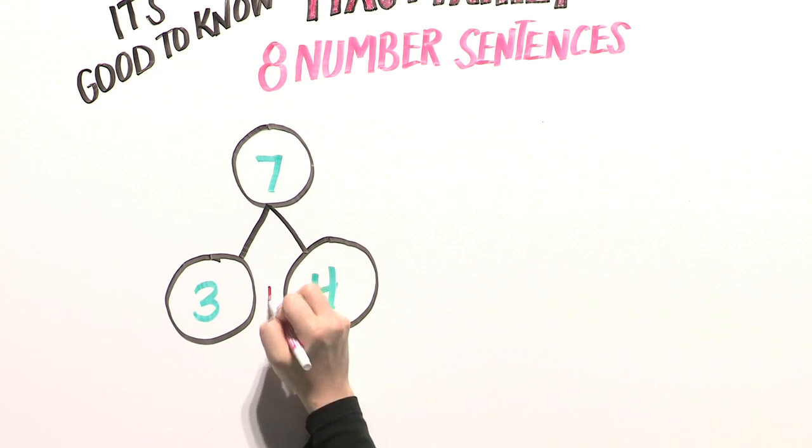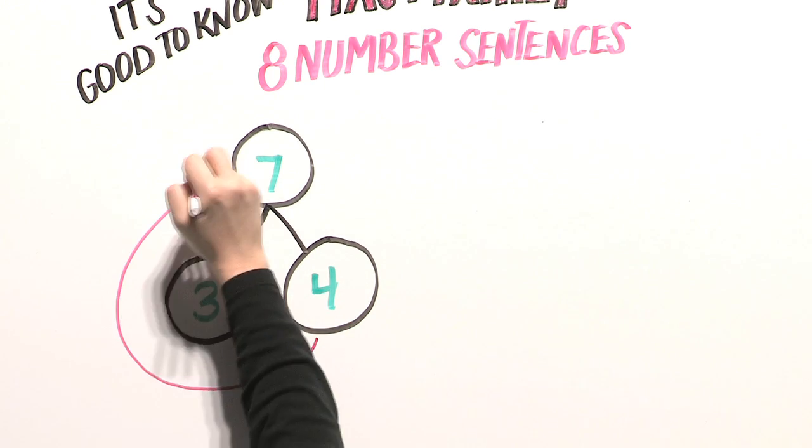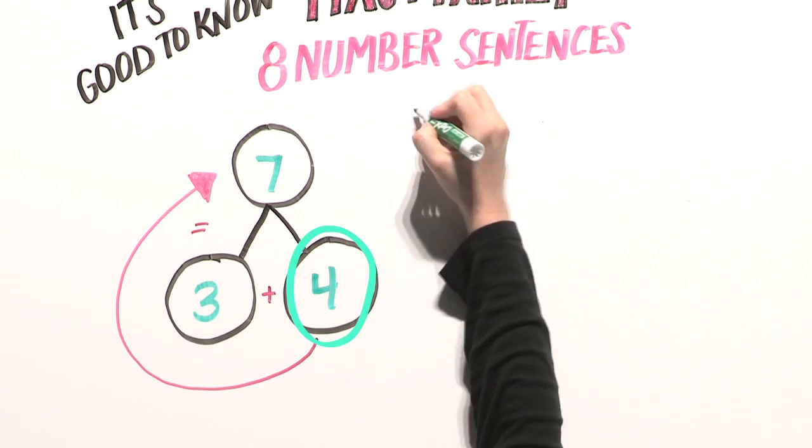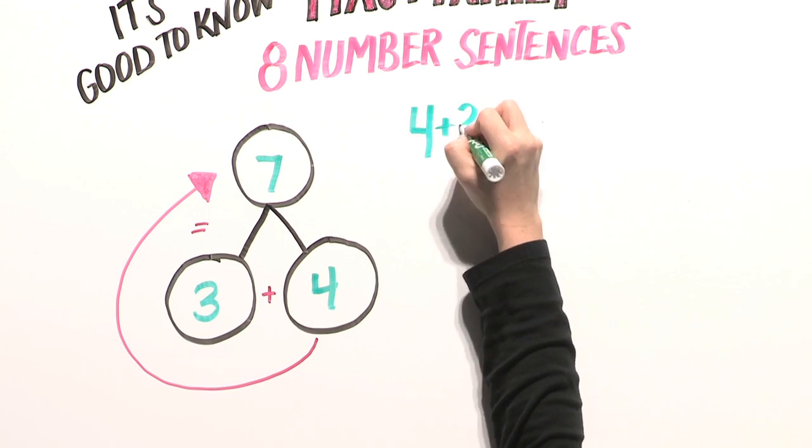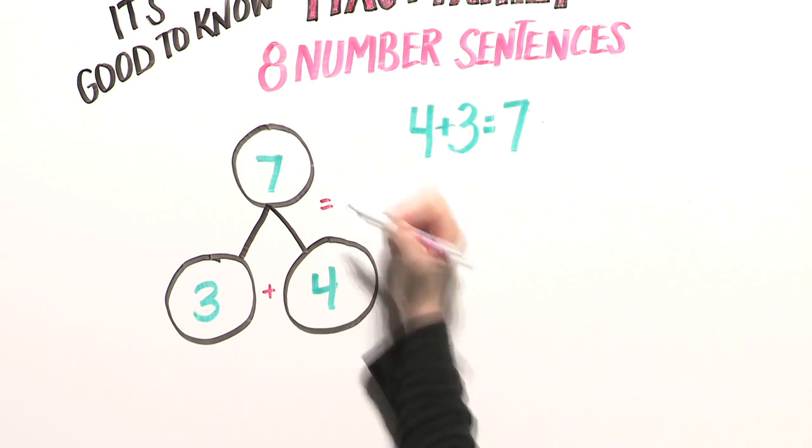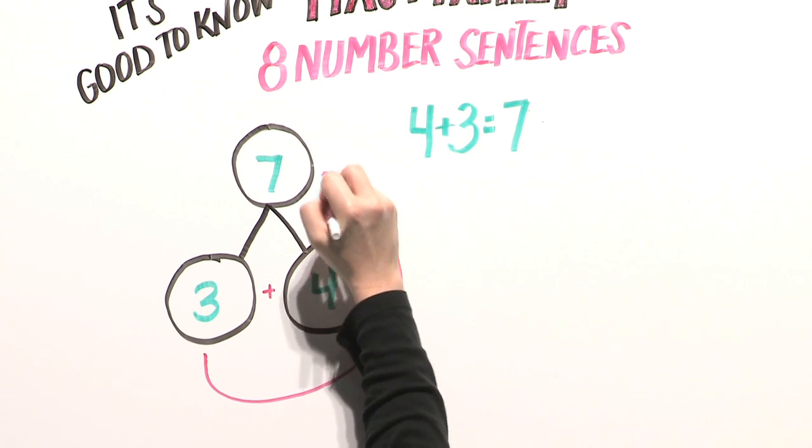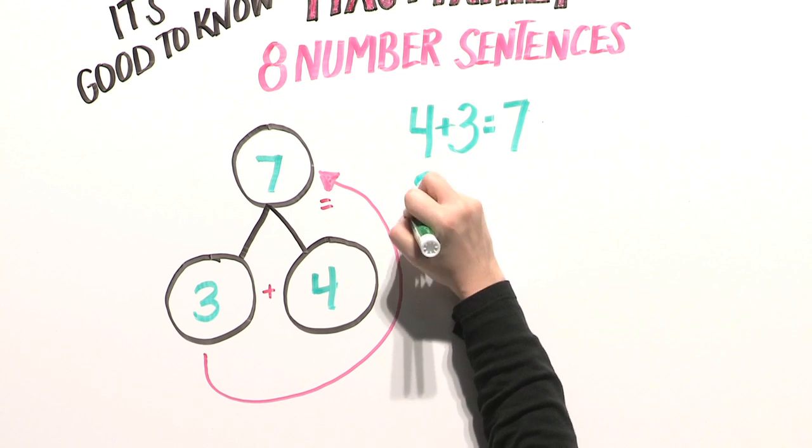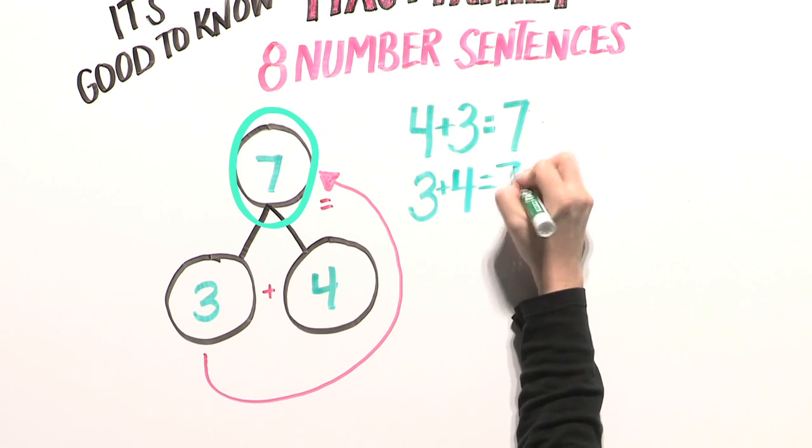When the number bond looks like this, read it this way: 4 plus 3 equals 7. When the number bond looks like this, read it this way: 3 plus 4 equals 7.